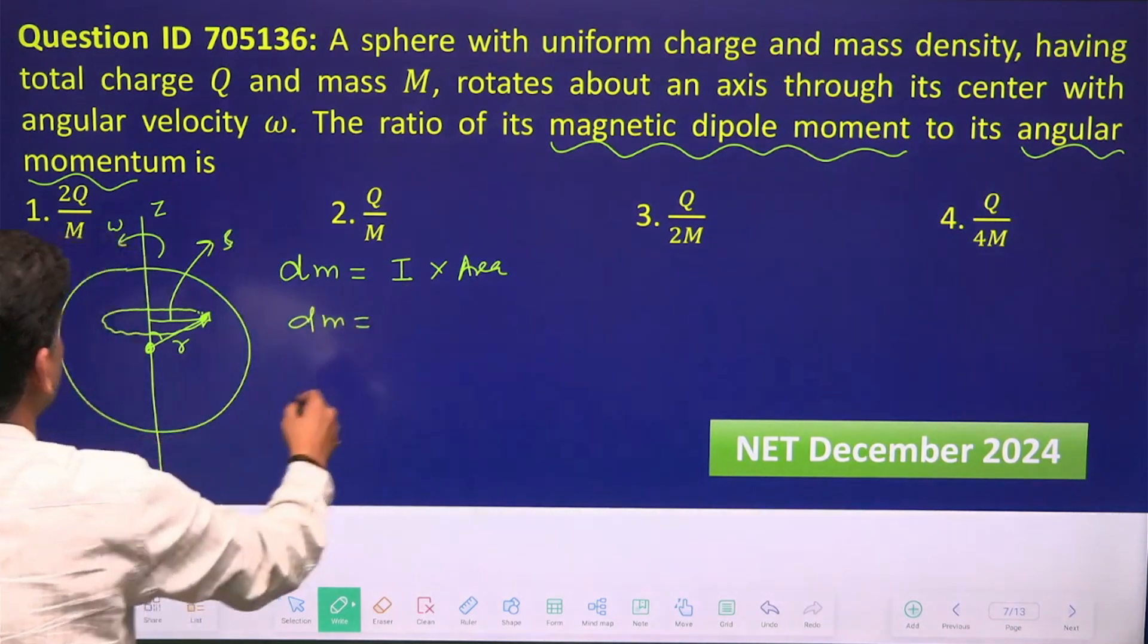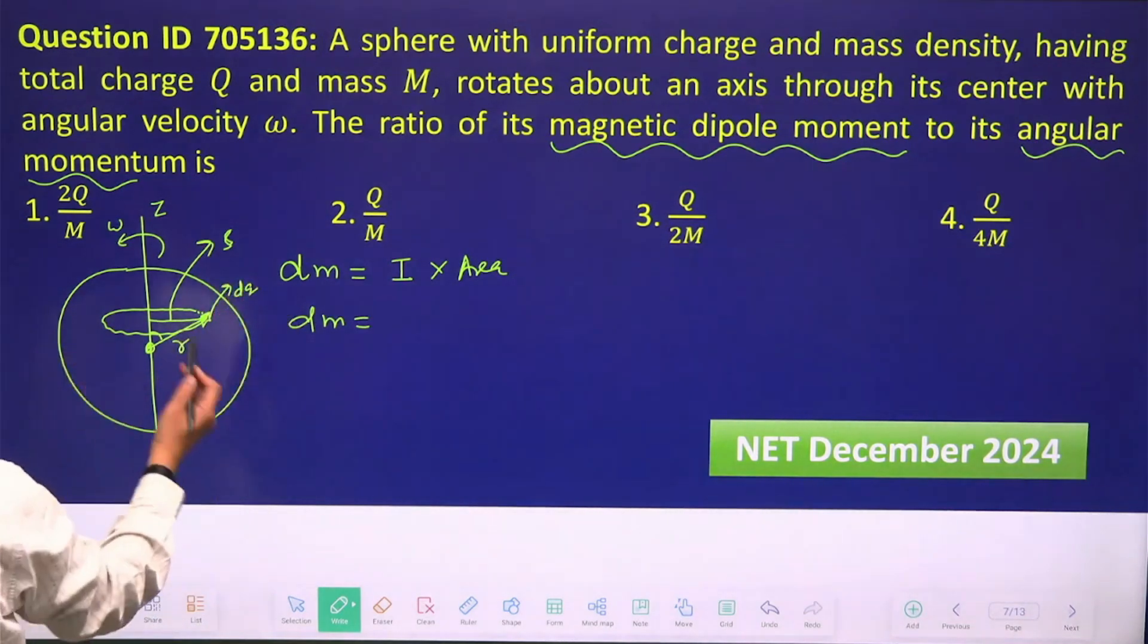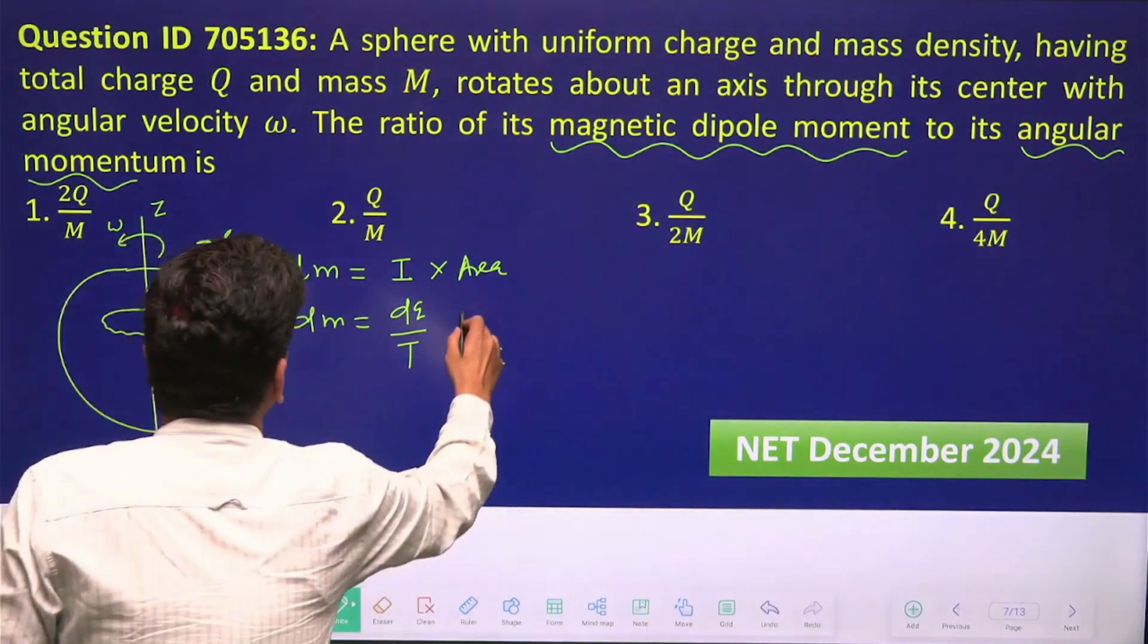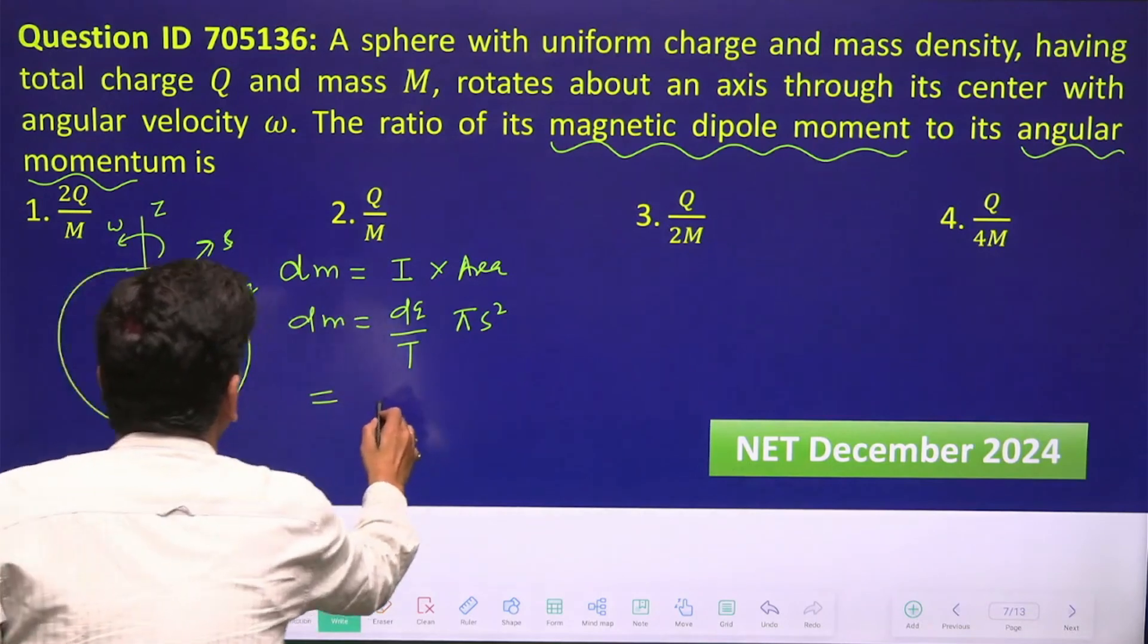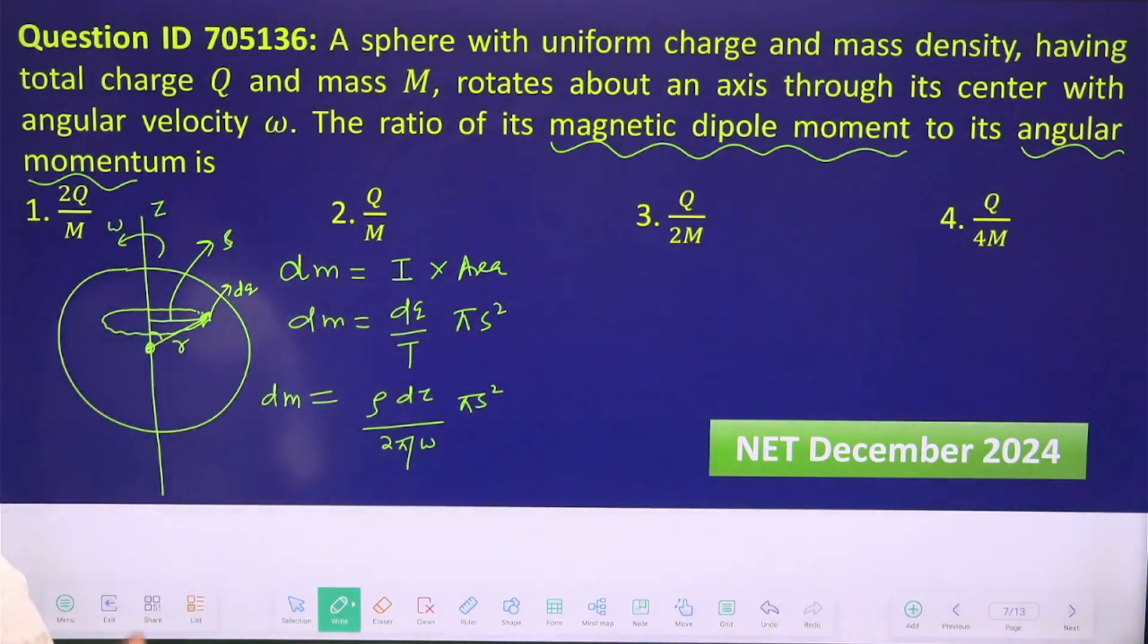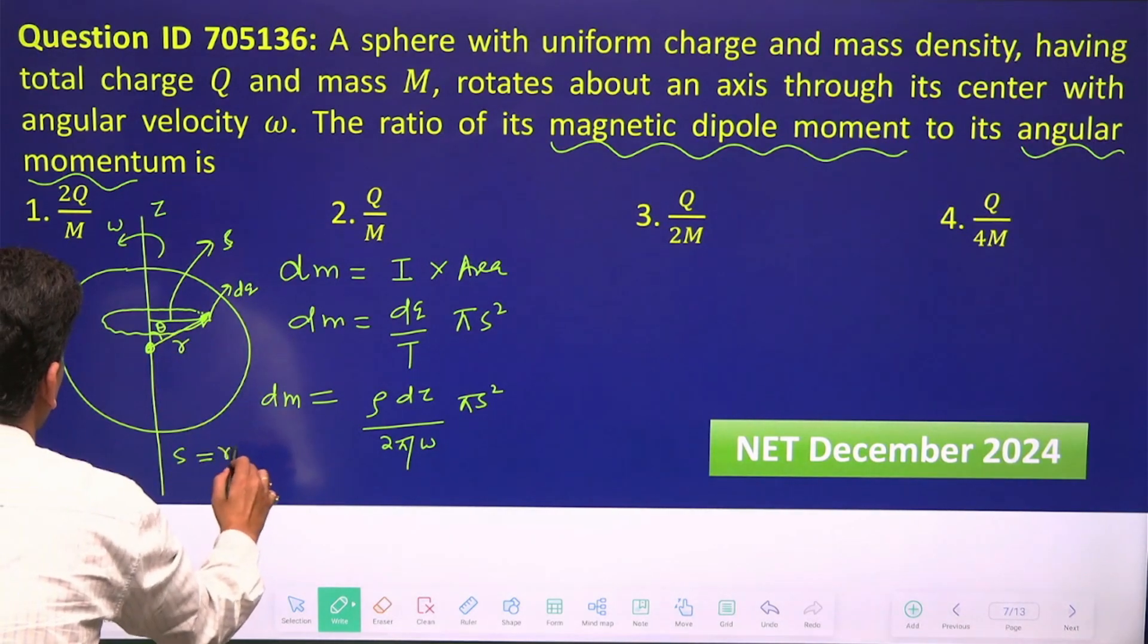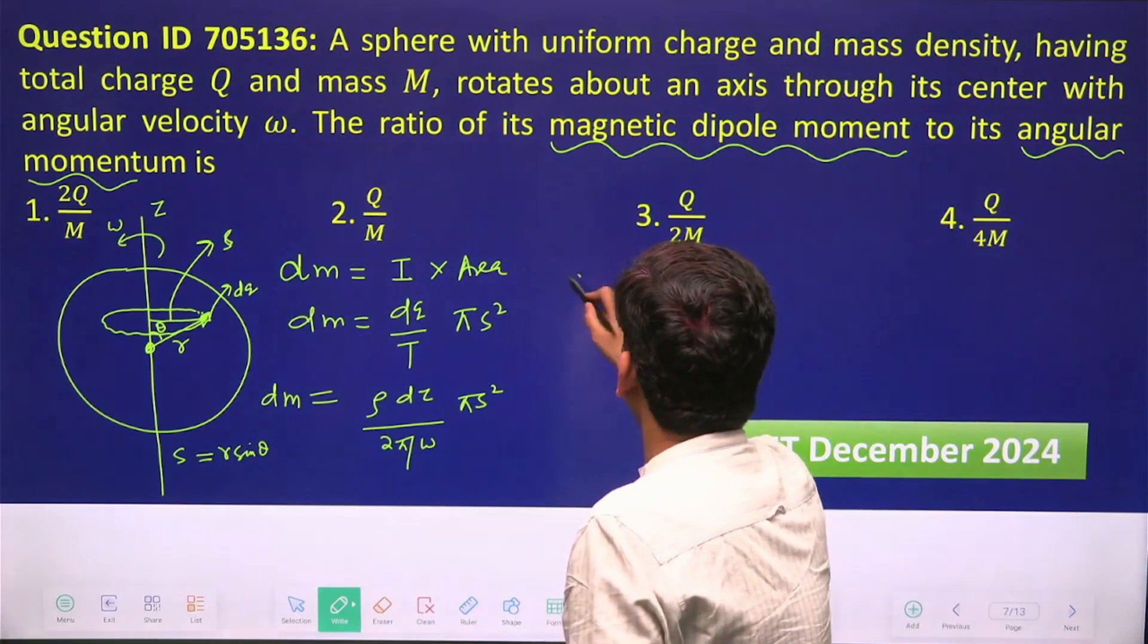What will be the magnetic moment? It will be the current produced because of this small charge dq - that will be dq by time period - and the area will be π s². This angle in spherical polar is θ, so your s will be perpendicular, so it will be r sin θ.